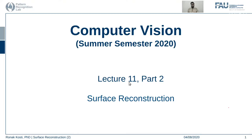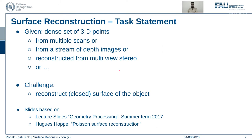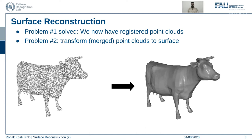Hello everyone and welcome back to the Computer Vision Lecture Series. This is Lecture 11, Part 2, and also our last recording for the computer vision lecture series this semester. In the last recording we saw how we can create a dense set of 3D points from multiple scans or different depth images, and we saw how we could register all the point clouds to get a final consistent surface reconstruction.